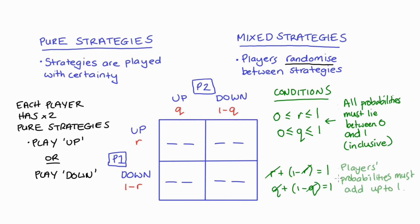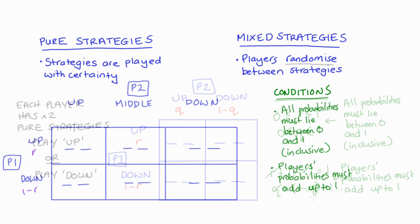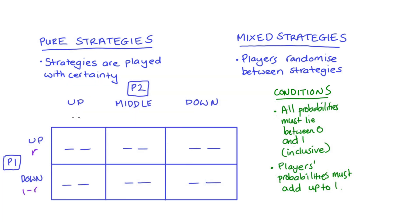That's why we see the r, one minus r combination for player one and the q, one minus q combination for player two — to make sure probabilities add up to one. If we changed our game so that player two had three possible pure strategies — up, middle, and down — player two could play up with probability q, middle with probability p, and so the probability attached to down would be one minus q minus p. This just ensures they all add up to one.